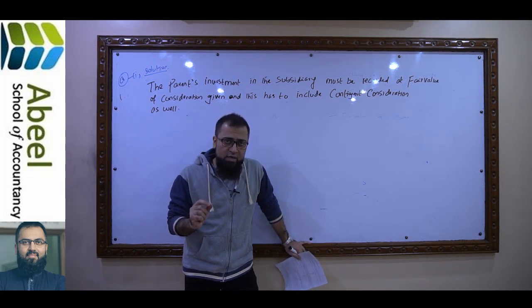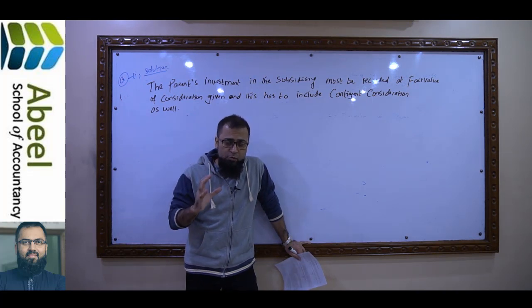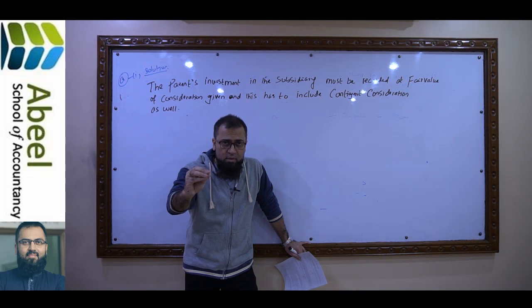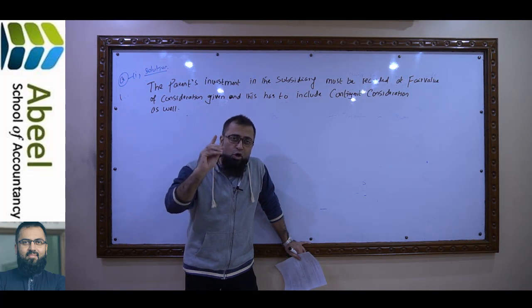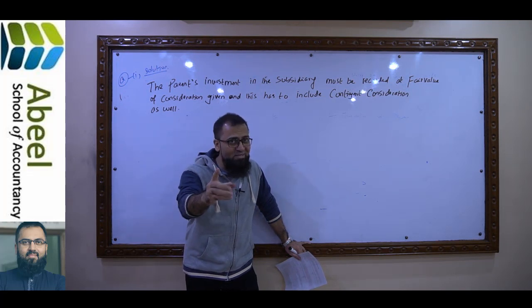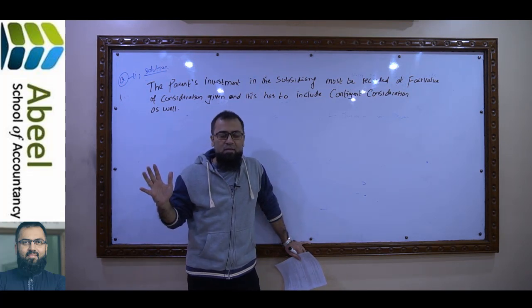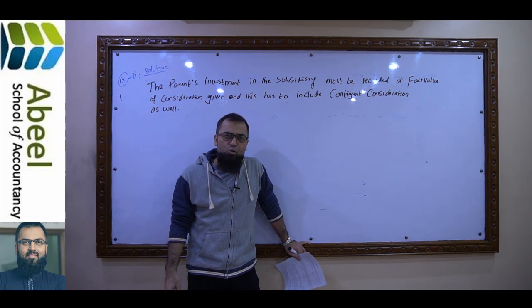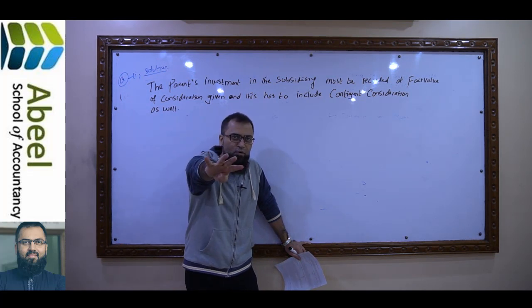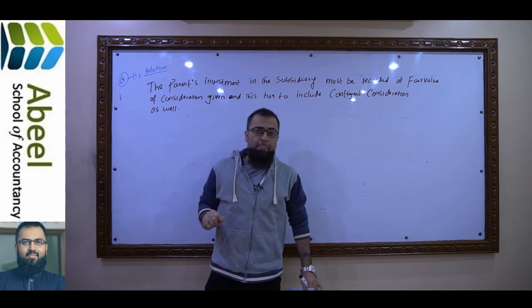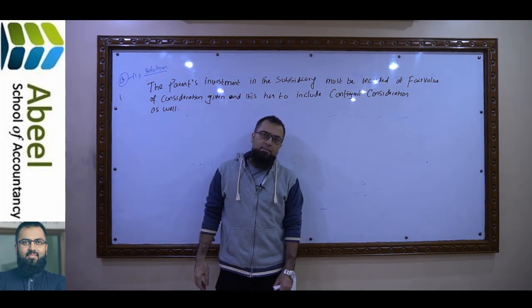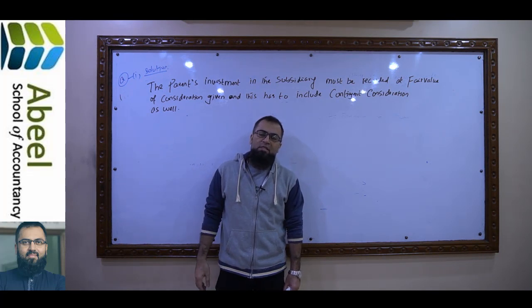Listen carefully — we are going to discuss what impact it will have in group accounts. The contingent consideration's present value is 16 million, but the chances of the condition being met are 25%. So the value of contingent consideration that applies to me is 16 million's 25 percent, which is 4 million. The question arises: when we record this contingent consideration, what will happen?